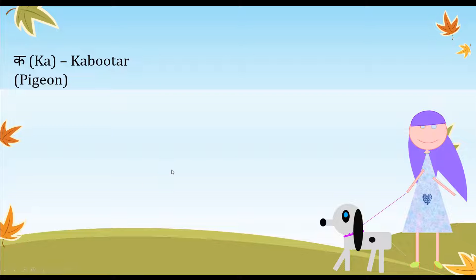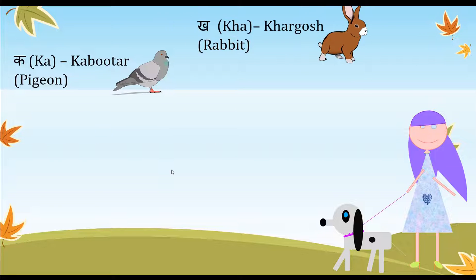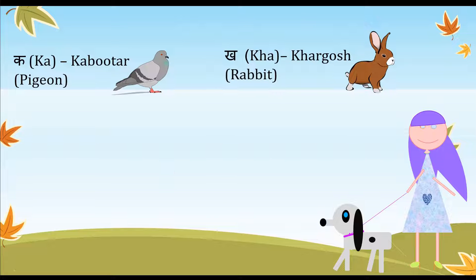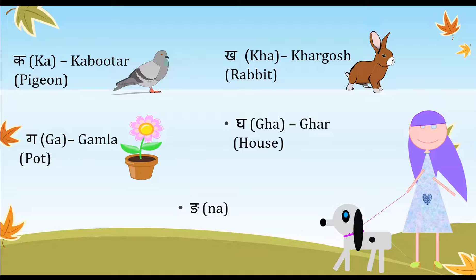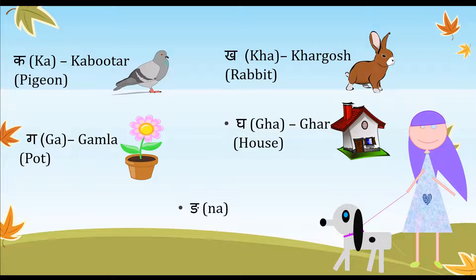The first alphabets we're going through are: 'ka' — 'kabootar' which is a pigeon; then 'kha' — 'khargosh' which is a rabbit; 'ga' — 'gamla' which is a pot; 'gha' — 'ghar' which is a house; and 'na' which is used to complete some words.